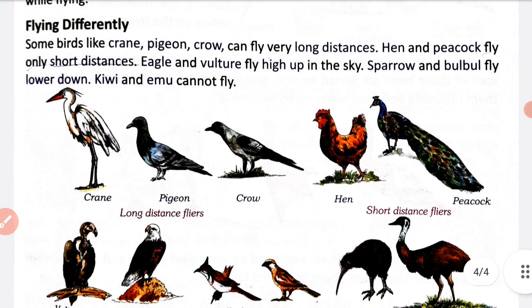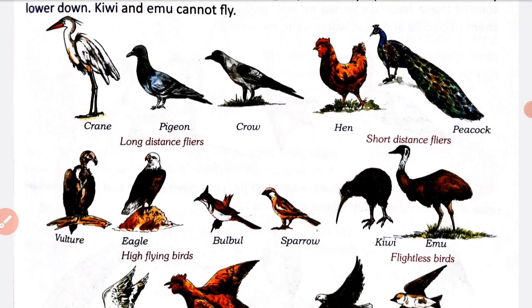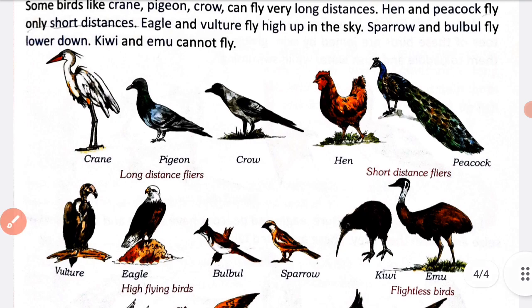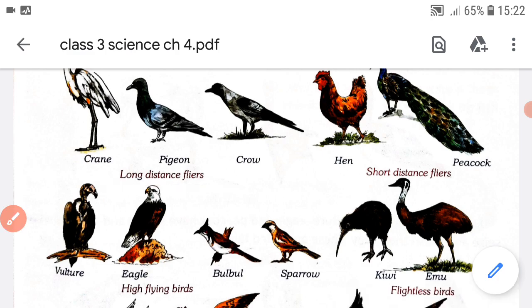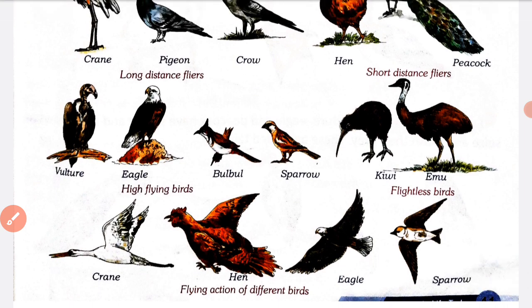Now next are flying types. Crane, pigeon and crow are the long distance flyers - yeh birds jo ki bahut long distance ke liye ud sakte hain. And hen and peacock are the short distance flyers - hand and peacock zyada doori ke liye nahin ud sakte, inki jo distance hoti hai wo short distance ke liye hai.